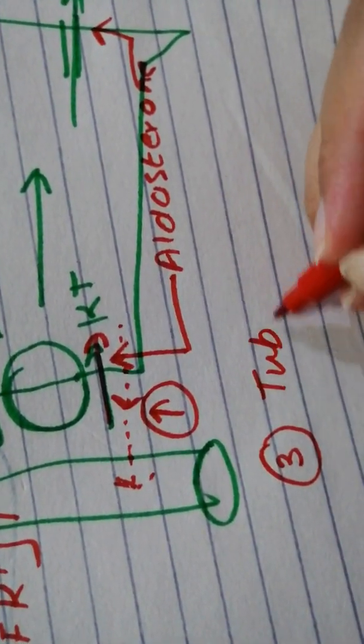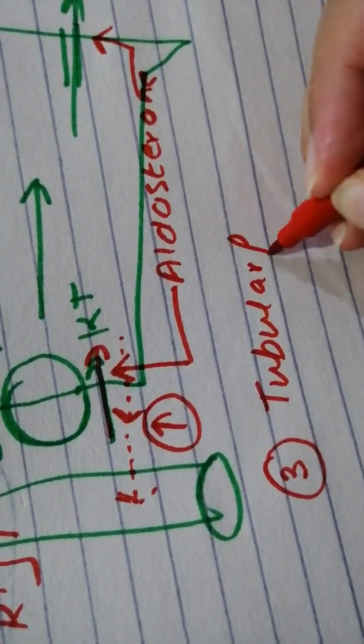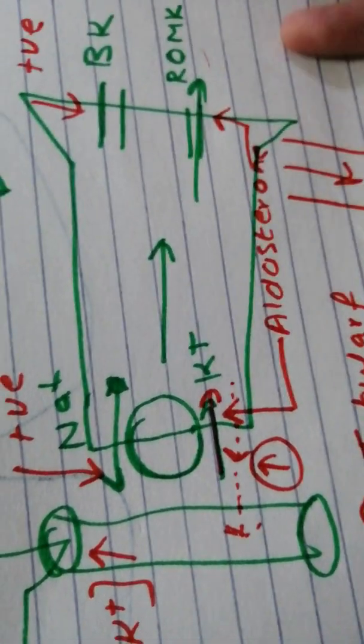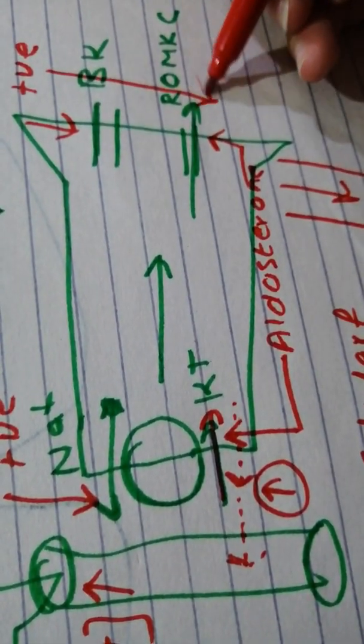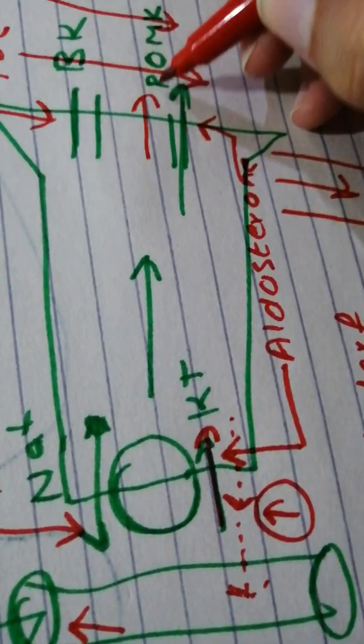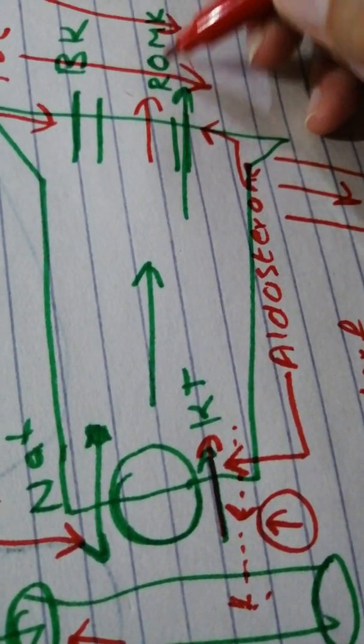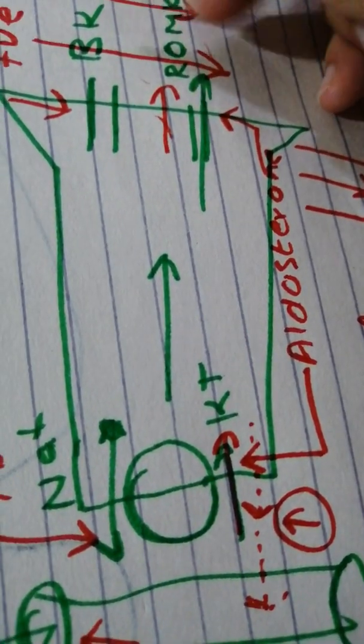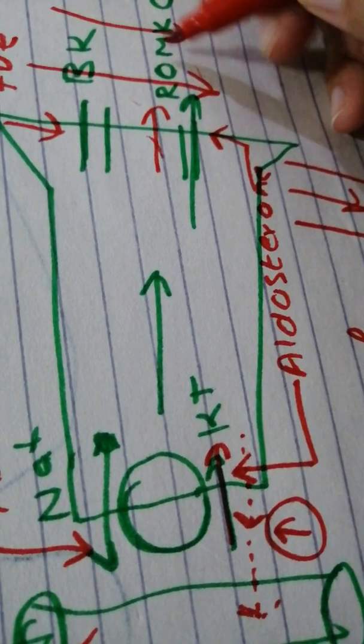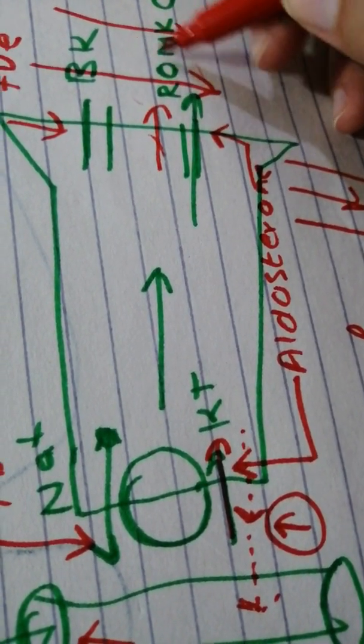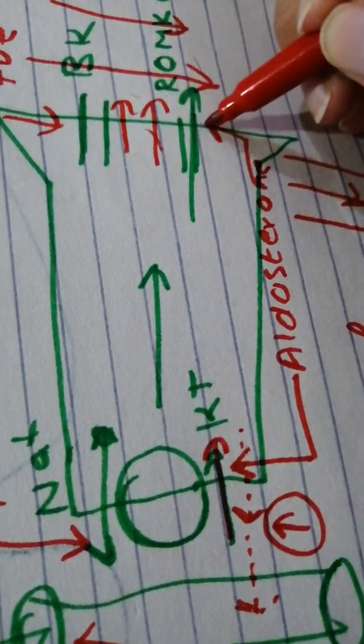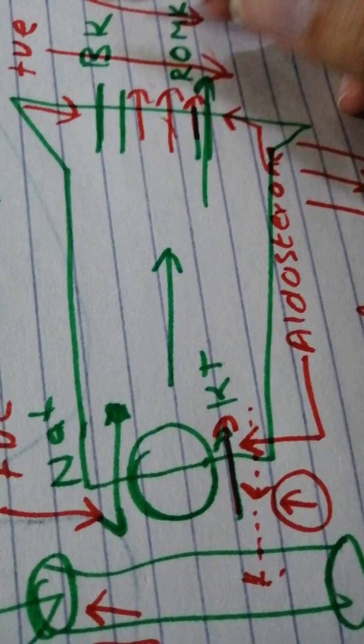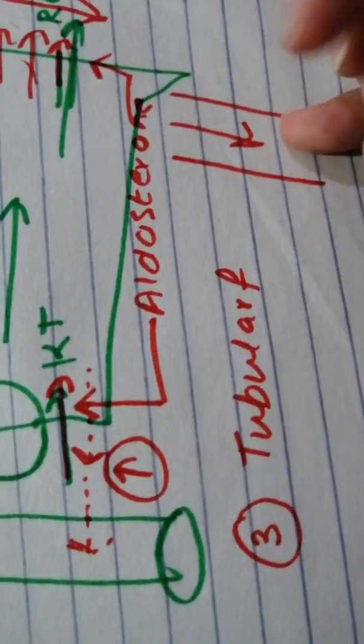Another thing is tubular flow rate. When tubular flow rate increases, potassium has entered over here, increasing lumen potassium concentration, which reduces the driving force for potassium diffusion. When tubular flow rate is high, that potassium is immediately washed away and the concentration gradient is maintained for potassium diffusion. So actually, an increase in tubular flow rate enhances potassium secretion.